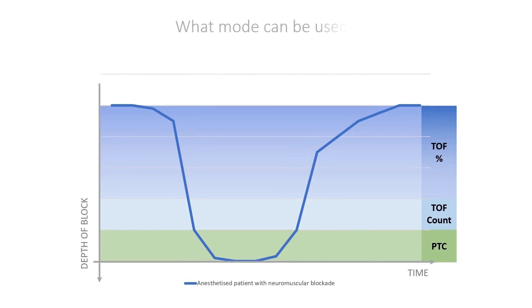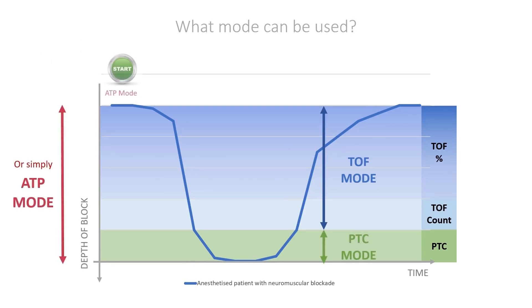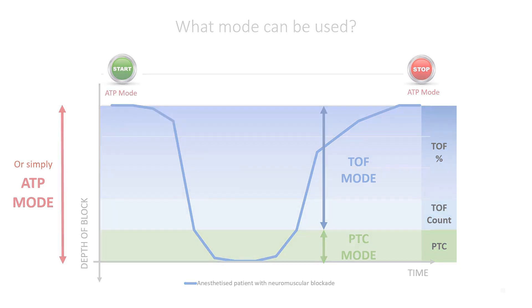The autopilot ATP mode is a very simple and efficient way to monitor the patient's paralysis without having to change the mode manually. You can choose this mode at the beginning of the intervention and let it run until the patient has reached the recovery phase.